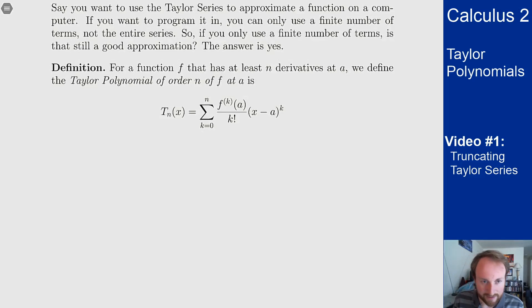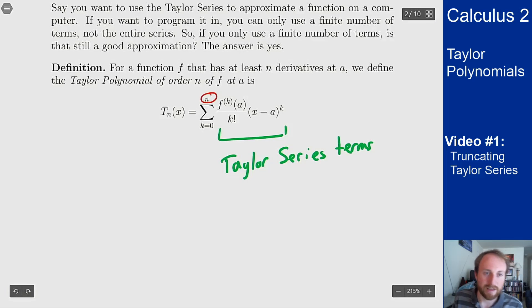The idea here is I'm taking my normal Taylor series sum and chopping it off at some upper index n. So instead of going up to infinity, I go up to n.